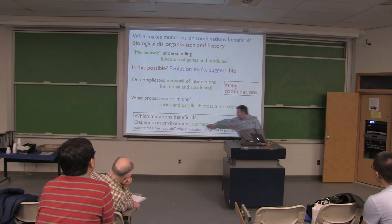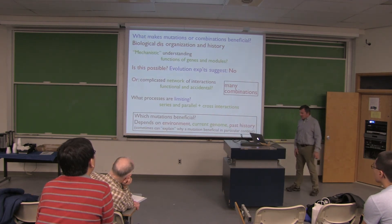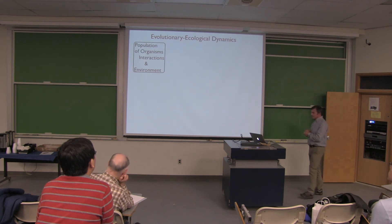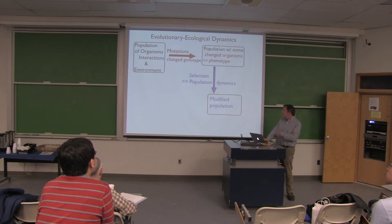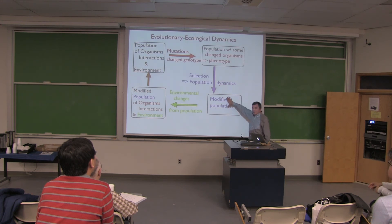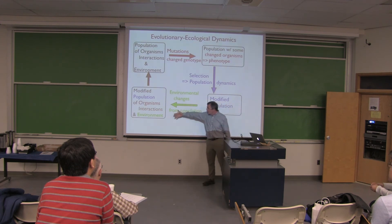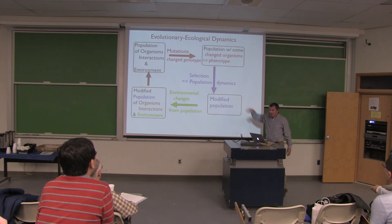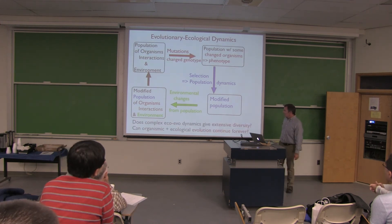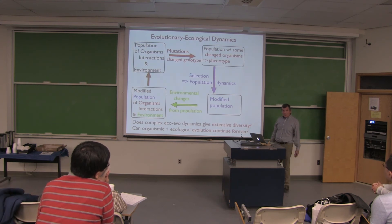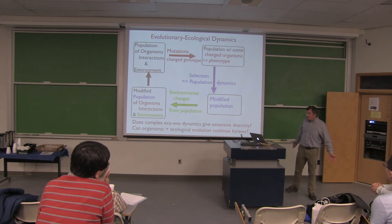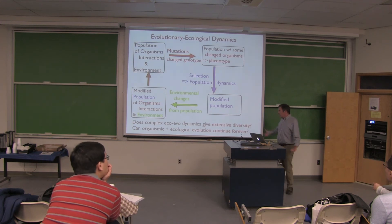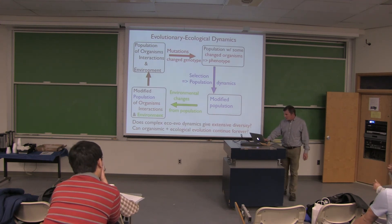We've so far ignored the environment, but now I want to think about the coupling of evolution and ecology. We have a population of organisms that interact with the environment. Mutations give different phenotypes, we evolve, get different populations. But then this new population can change the environment — bacteria do this all the time, we do it a lot now. That gives a modified population, and we go around this cycle. A fundamental question: can this complicated ecological dynamics give evolution that tends to continue? Can it give something which intrinsically will tend to produce extensive diversity?